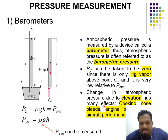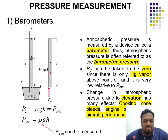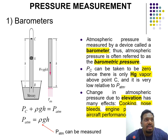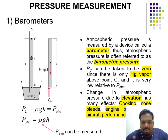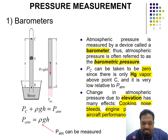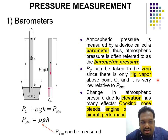Changes in atmospheric pressure due to elevation have many effects, especially in cooking — cooking at sea level versus cooking at a higher place makes a difference. At a particular height, your nose will start to bleed because the pressure is different. Engine performance and aircraft performance are all affected by changes in atmospheric pressure.